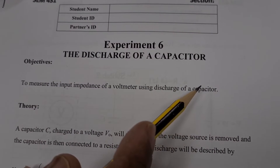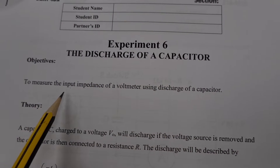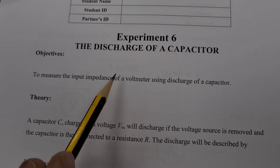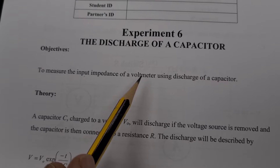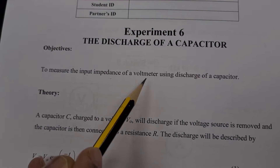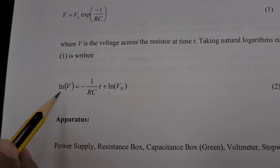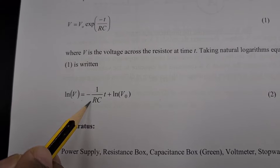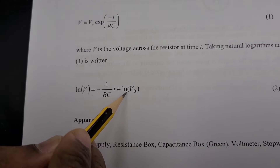We are going to charge the capacitor and after that discharge it. With that, we are going to find the input impedance of the voltmeter. The input resistance of the voltmeter is a very large value — it should be in terms of mega ohms. For this experiment, we are going to use this equation: natural log of V equals minus 1 over R multiplied by C, multiplied by T, plus natural log of V naught.